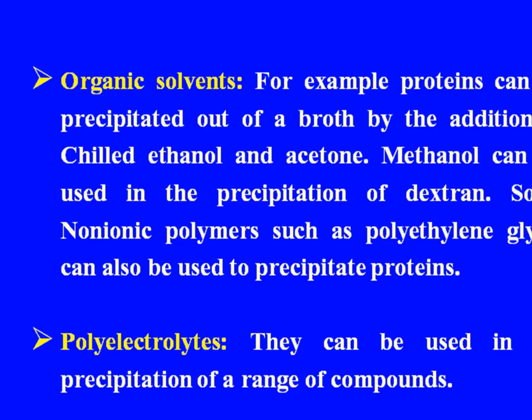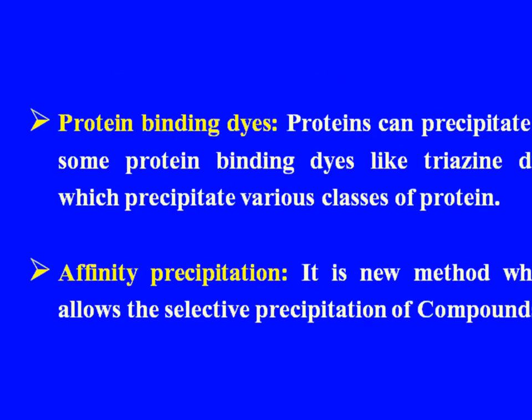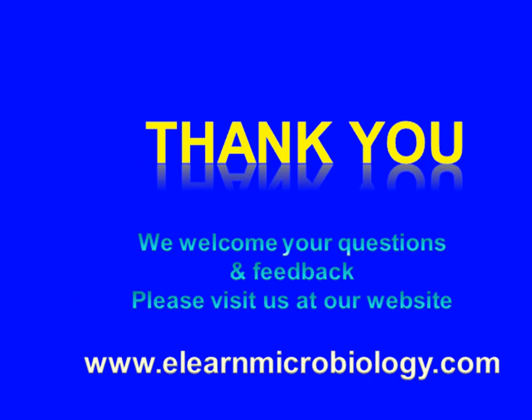Polyelectrolytes can be used in the precipitation of a range of compounds. Protein binding dyes: proteins can precipitate using some protein binding dyes like triazine dyes, which precipitate various classes of protein. Last is affinity precipitation — a new method which allows selective precipitation of compounds.